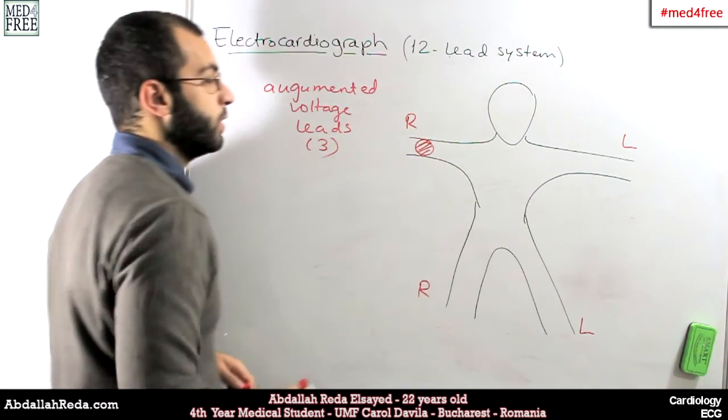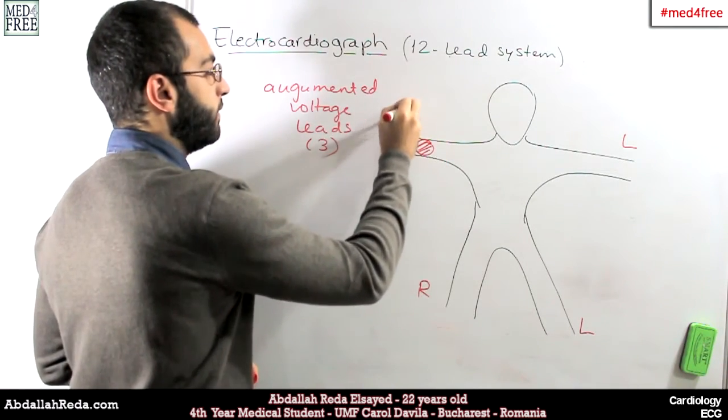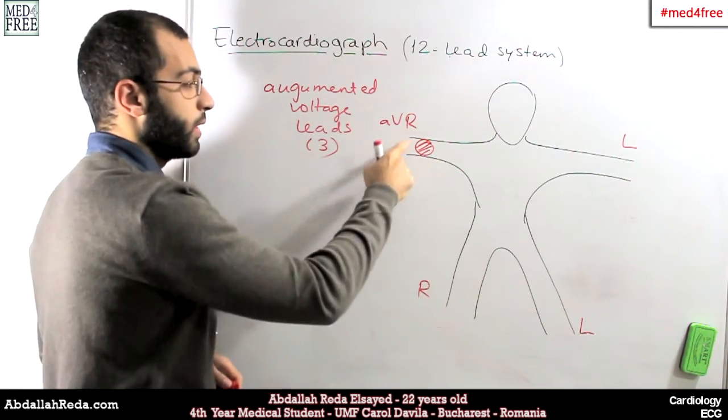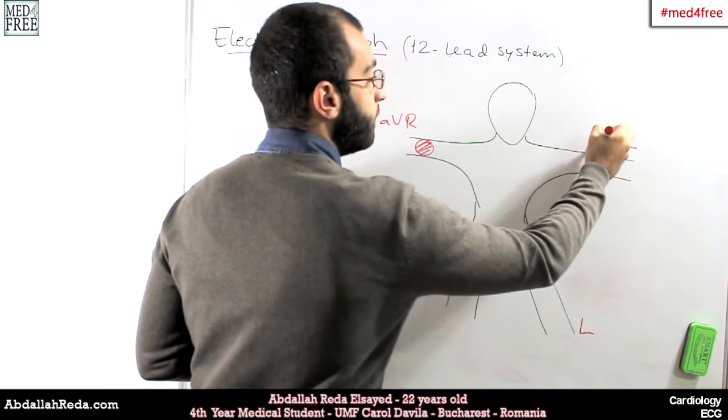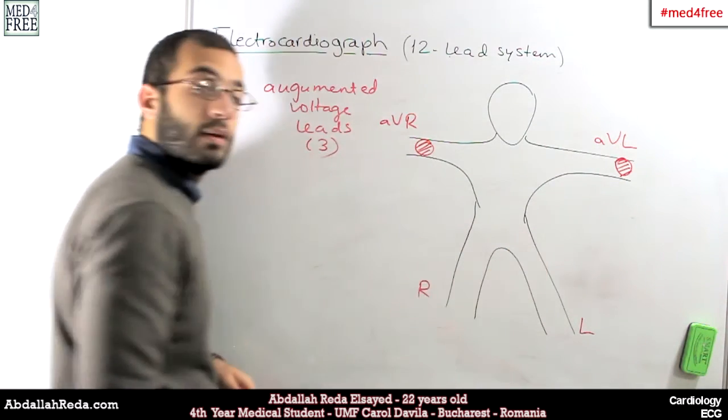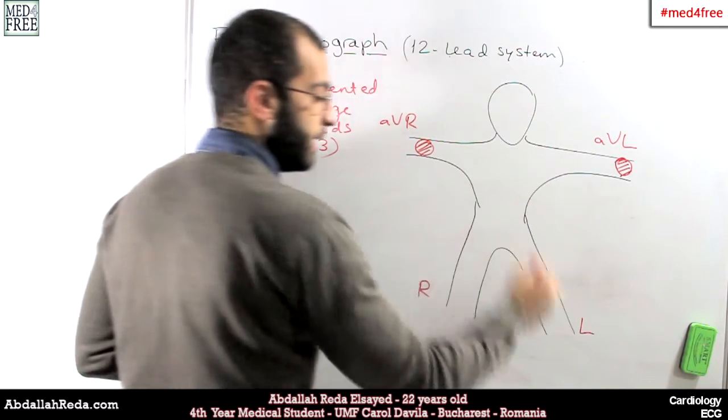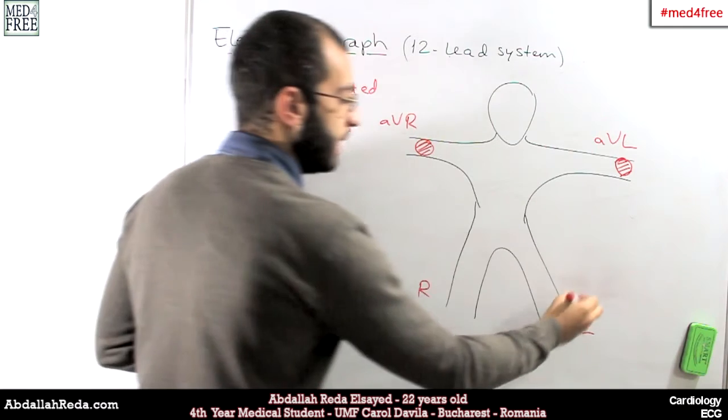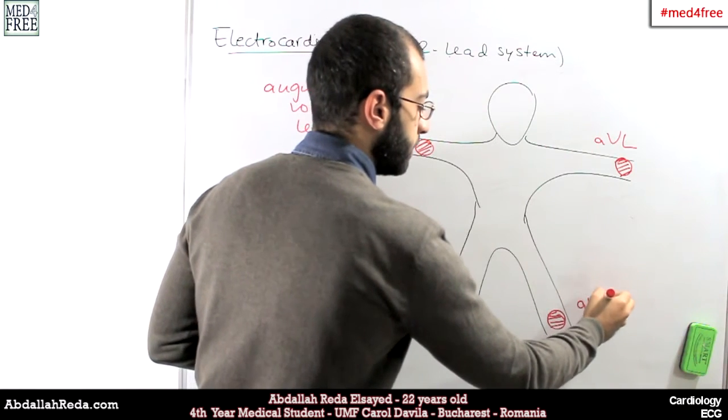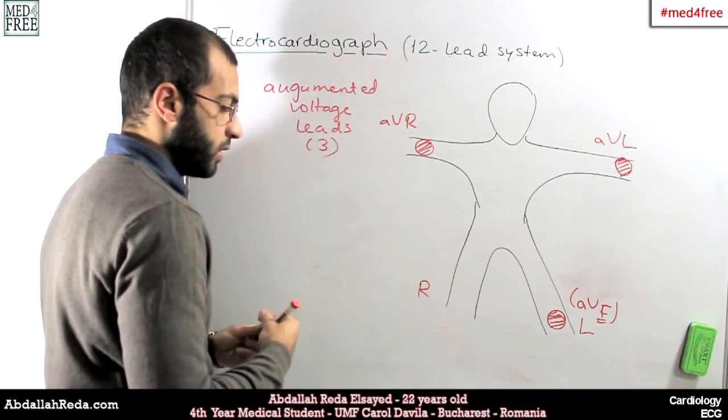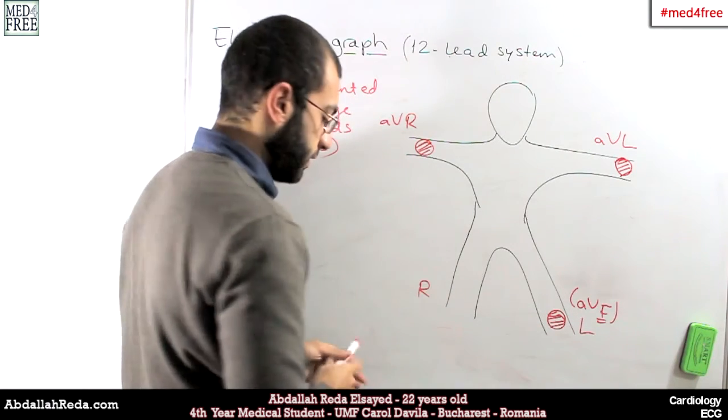We have one which is called AVR. AV stands for augmented voltage. AVR on the right arm, AVL on the left arm, and the third one is called AVF. F for foot, and it's put on the left foot.